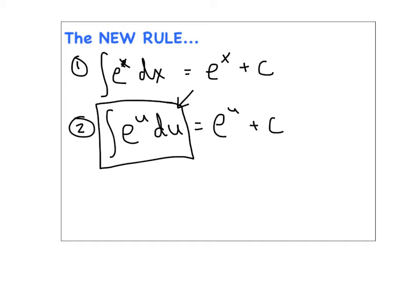At least 90% of the time we are going to let u equal the exponent — that is our theme tonight. There are very few exceptions, and you'll know right away if it is one of those because the x's won't cancel and you'll have to try something else. Let's start with that premise every time: let u equal the exponent. Here's our first live example.